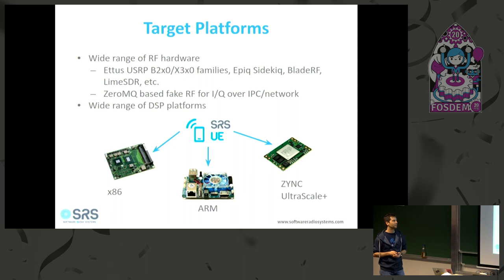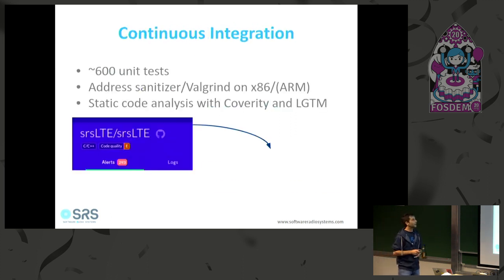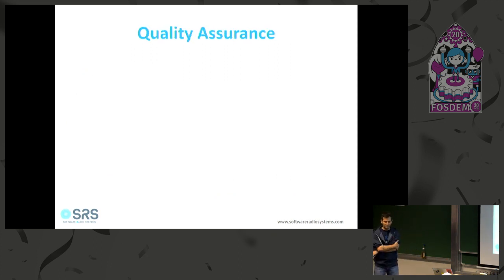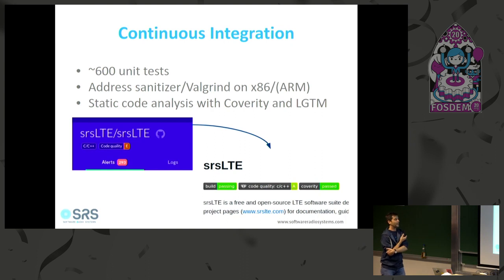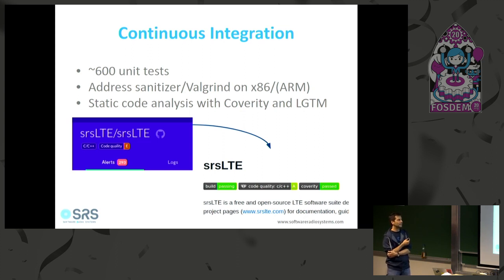Quality assurance is essential if you want to target commercial-grade deployments. One key building block is our continuous integration platform — we currently have around 600 unit tests constantly running in Jenkins, building for x86 and ARM, running AddressSanitizer, Valgrind, and executing those tests on a per-pull-request basis and periodically.